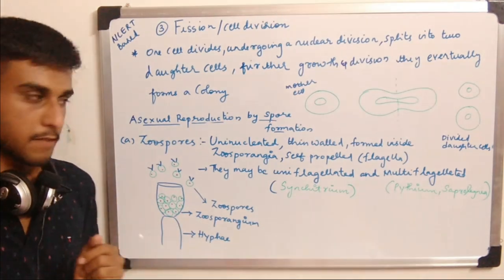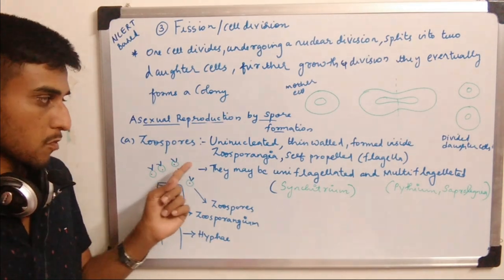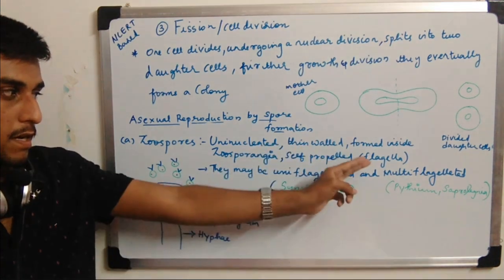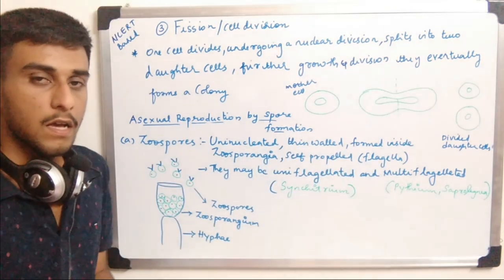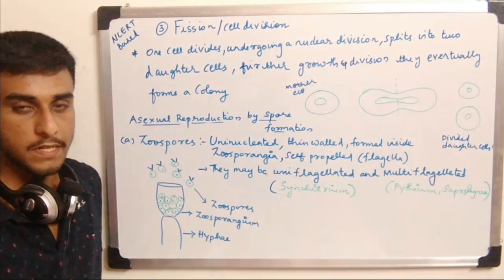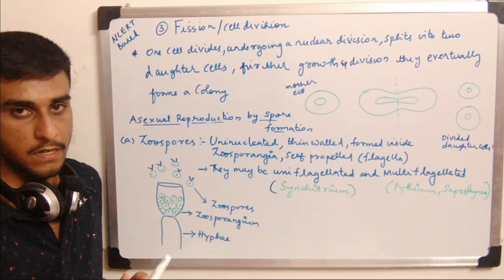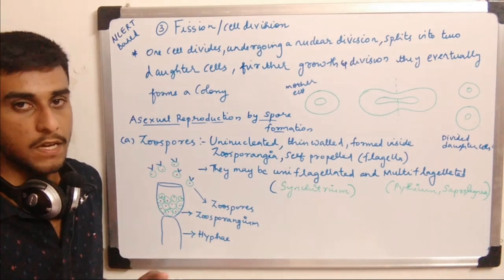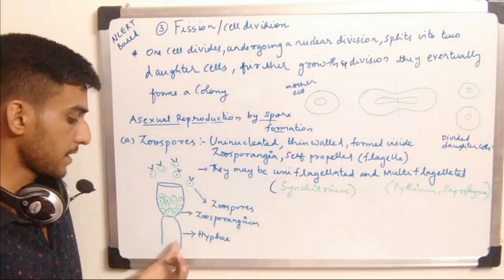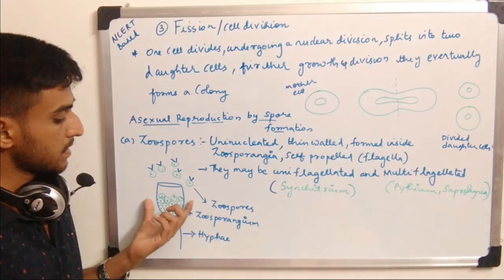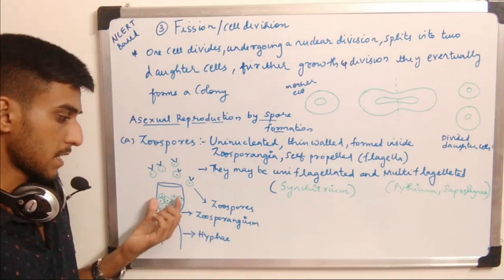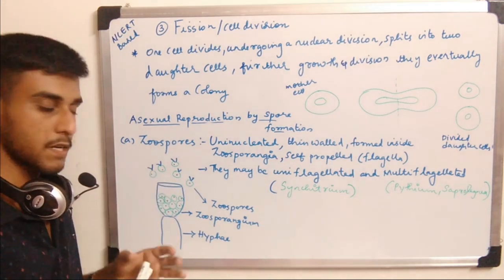Looking at the diagram, a zoosporangium is a reproductive structure of a fungus used to produce zoospores. Here a modified reproductive part — the zoosporangium — produces zoospores. At a particular time period they release zoospores, which are self-propelled and do not need any external mechanism.